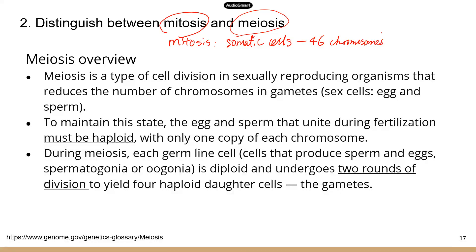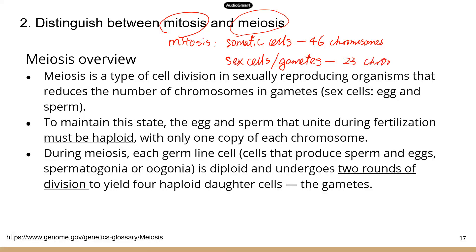There is a fraction of cells in your body that are not somatic cells. They're known as sex cells or gametes. Gametes only have 23 chromosomes.